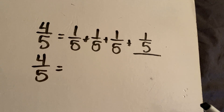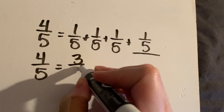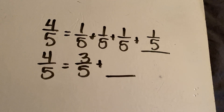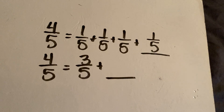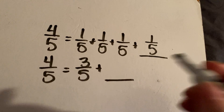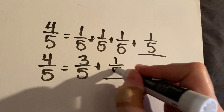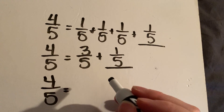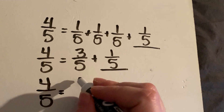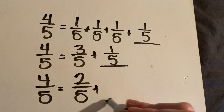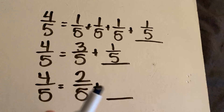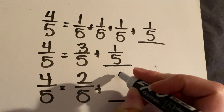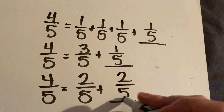Then it'll have another row asking it in a different way — something like three fifths plus what is four fifths. So in that blank would be one fifth. Then it has it a third time: four fifths equals two fifths plus blank. Two fifths plus how many fifths gets me to four fifths? Two plus what is four? Two plus two is four, and the denominator stays the same.